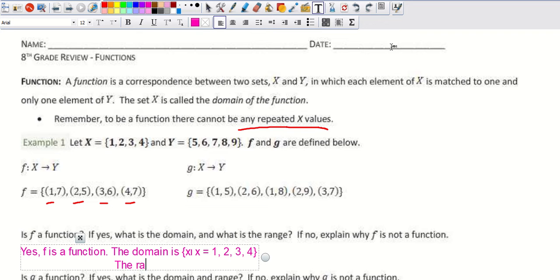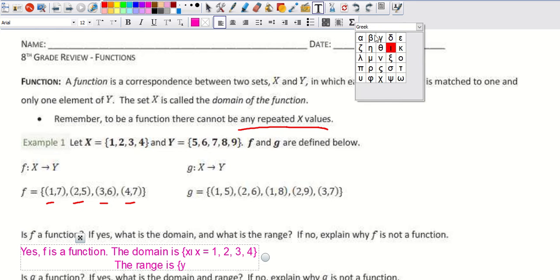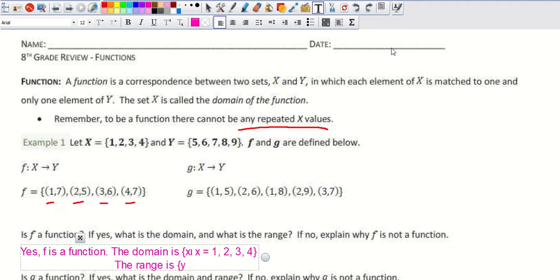And then the range is the set of y, such that, there we go, even better. Y is equal to, and then we throw our numbers, so 7, 5, 6, 7. So it's still a function because the x's don't repeat.